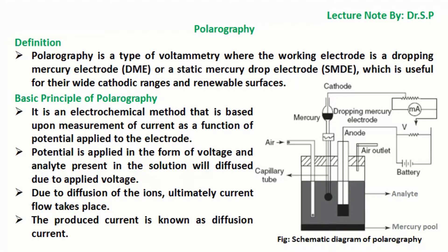In this tutorial we will discuss polarography. Polarography is a type of voltammetry where the working electrode is a dropping mercury electrode (DME) or a static mercury drop electrode (SMDE), which is useful for their wide cathodic ranges and renewable surfaces.